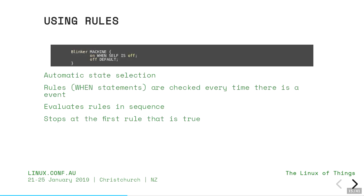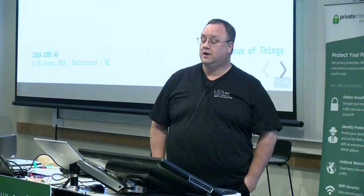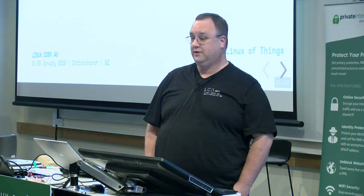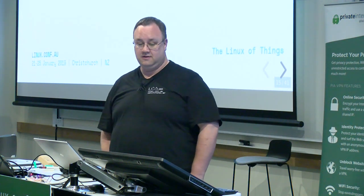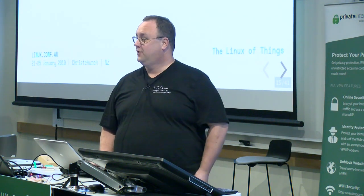This is a blinker machine with a 'when' statement. When the condition is true and being the only state, you will transition to it when it's true. What you'll notice is 'on when self is off' — you'll only be in this state a very short period of time, because you go to 'on' and then you can't stay there anymore because you're not 'off' anymore. So you fall to the default state. It's a great way to blink very quickly.